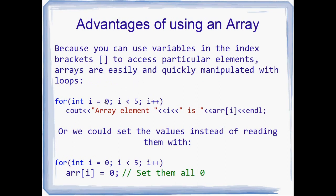Which means we can quite happily use for loops and other loops to access the elements of our array. If you wanted to print out the five values of separate integer variables, you'd have to put five different couts — that's really slow. But if you use an array, you can just say: for int i = 0, while i is less than 5, i++, and use that loop to print out each element. Or, in just two lines using a for loop and ARR[i] = 0, you've set all five elements of the array to zero — much quicker than the original five lines.